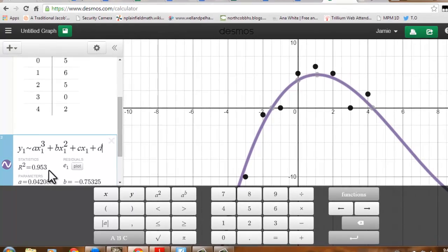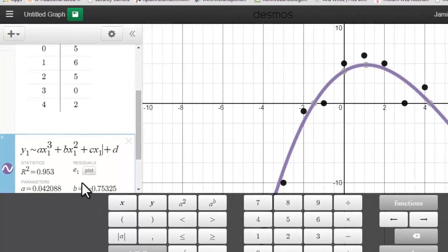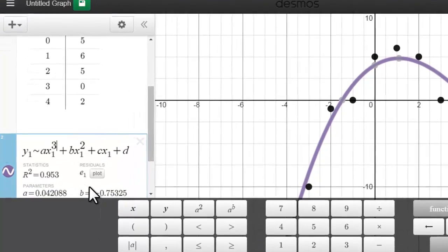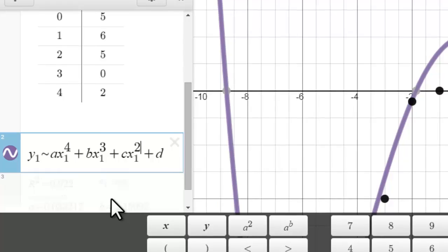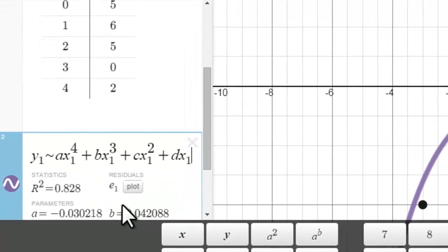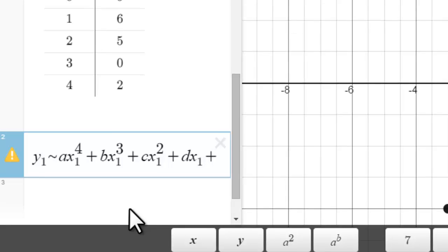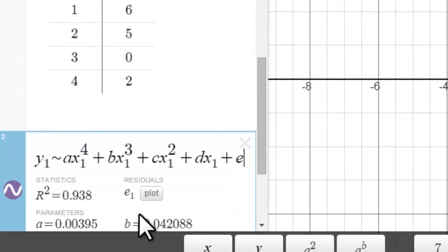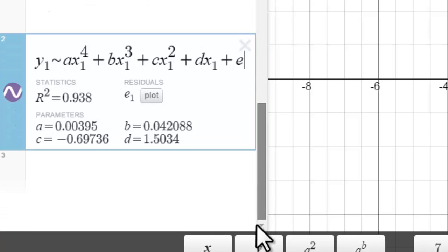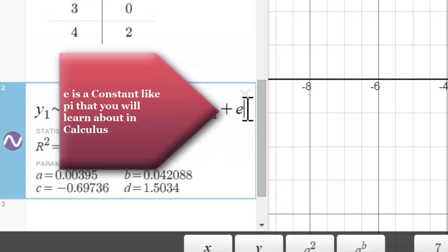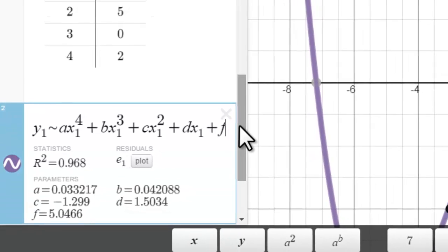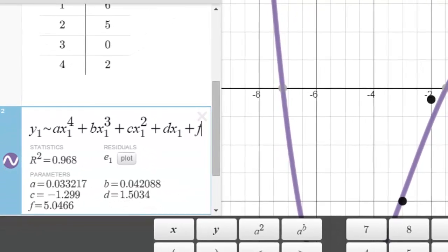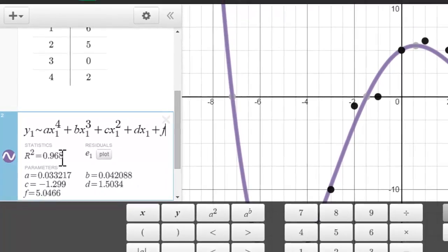My curve changes, my r-squared value changes, and I can keep playing around with this. I'll try quartic. Some values in Desmos are reserved values. For example, e is a special value like pi, so we want to make sure we don't use that as one of our parameters, so I'll just make that f. Again, slightly different curve.